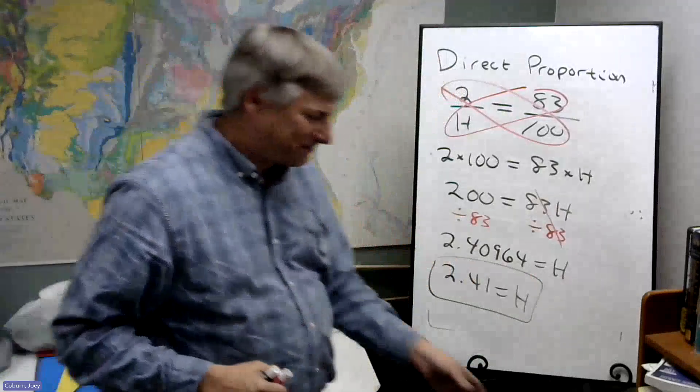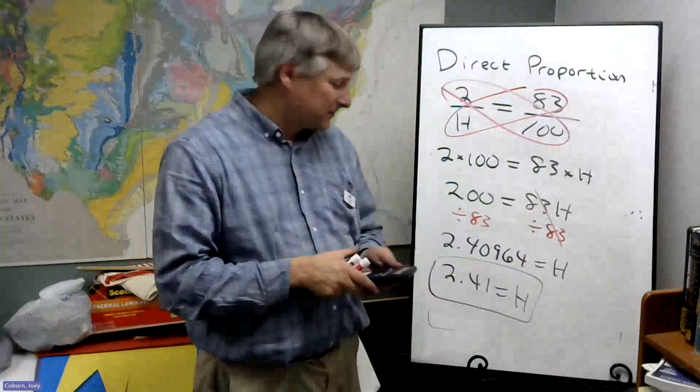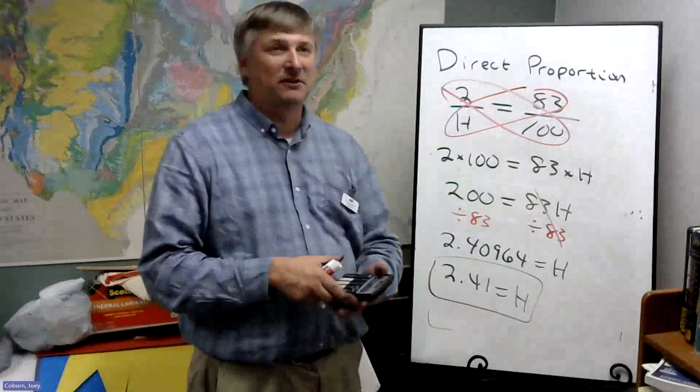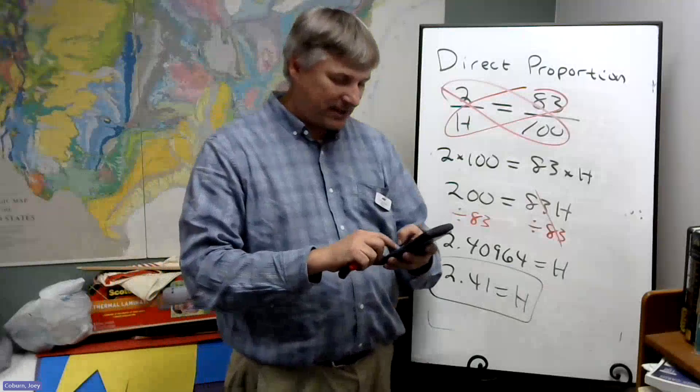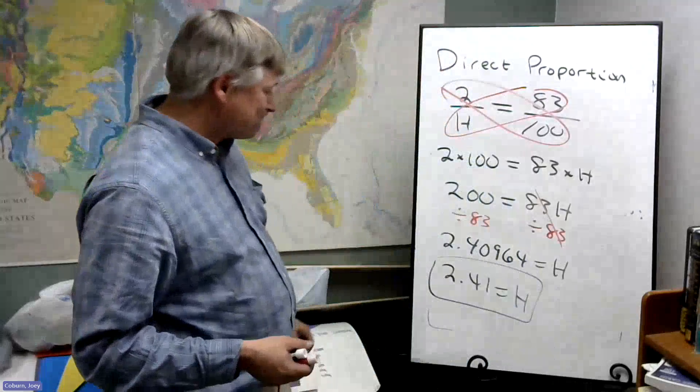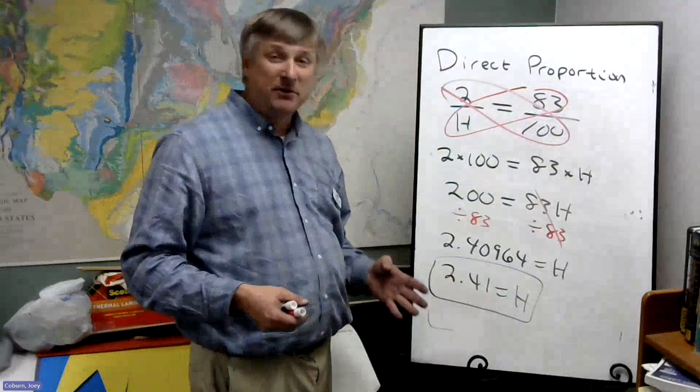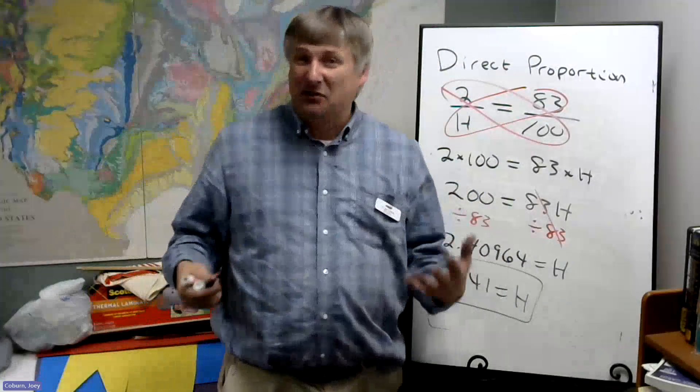So 0.41, well it's less than a whole hour. This is two hours and then a fraction of an hour. So if I take 0.41 times 60 minutes, it's about 24, 25 minutes. So roughly two and a half hours would get you 100%.